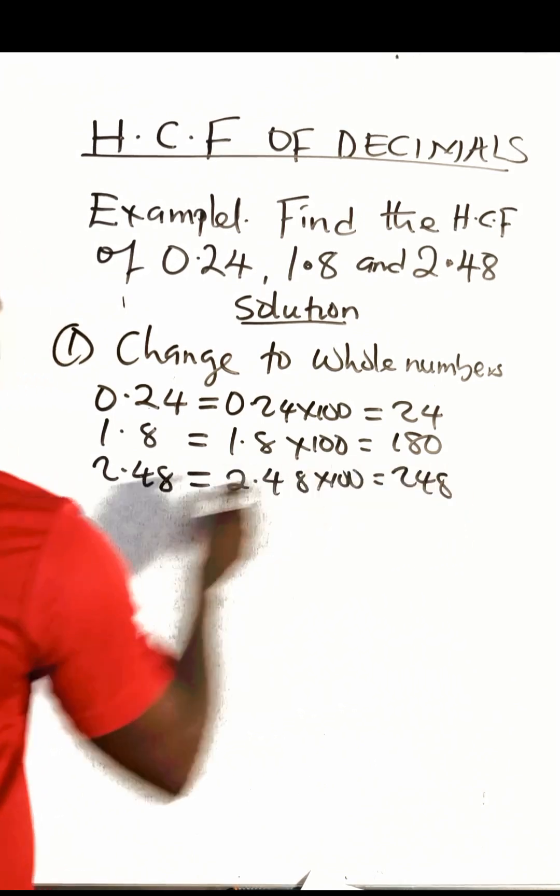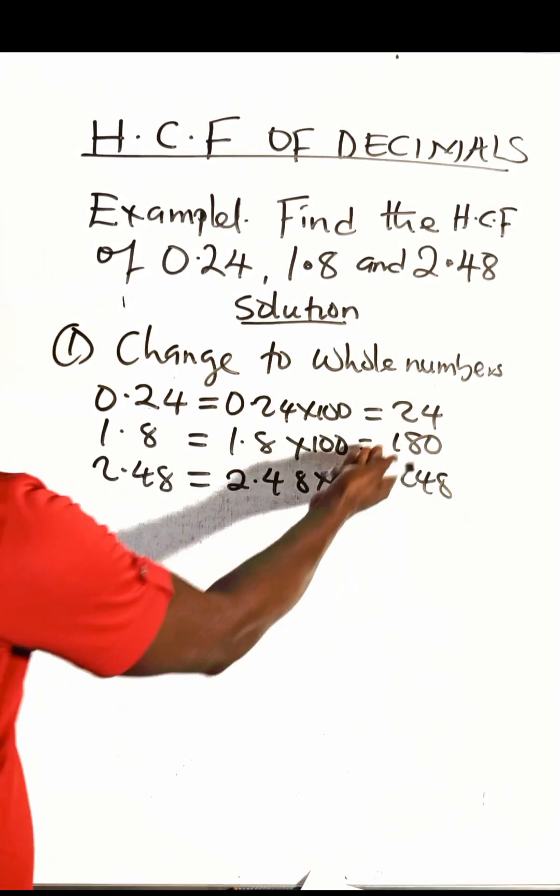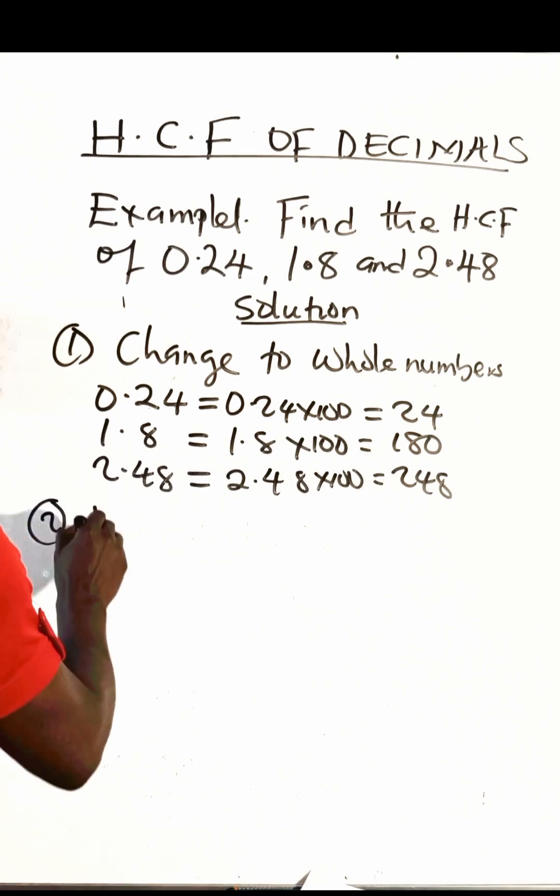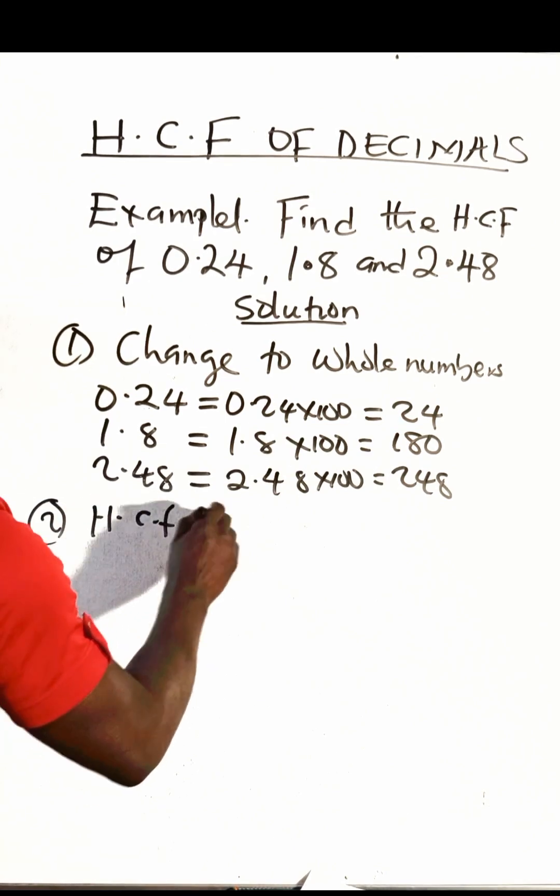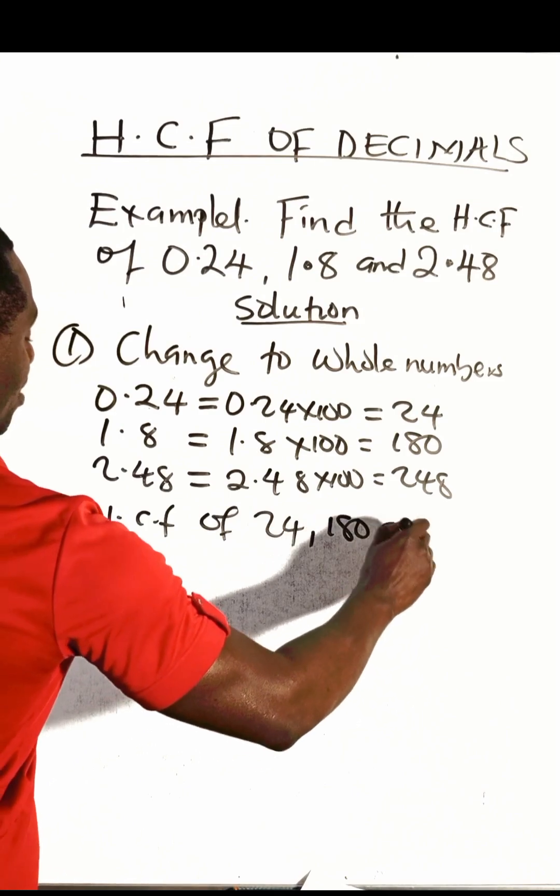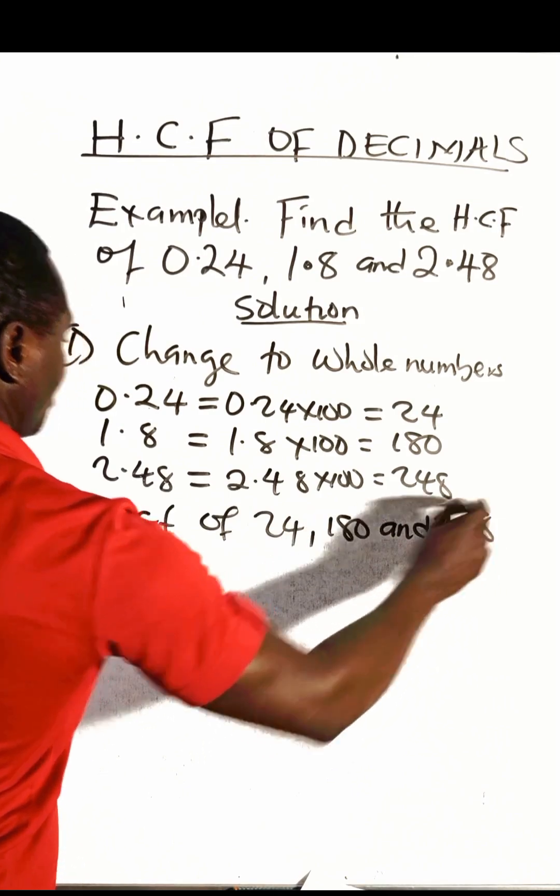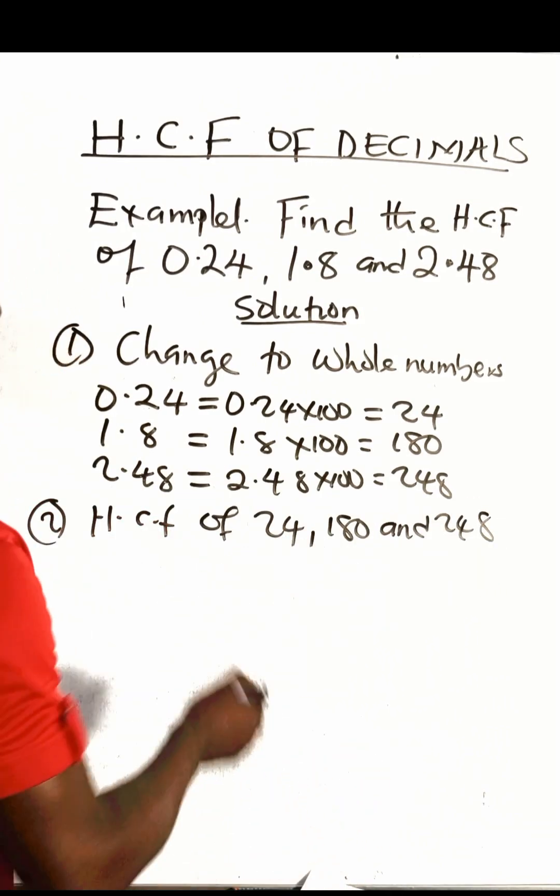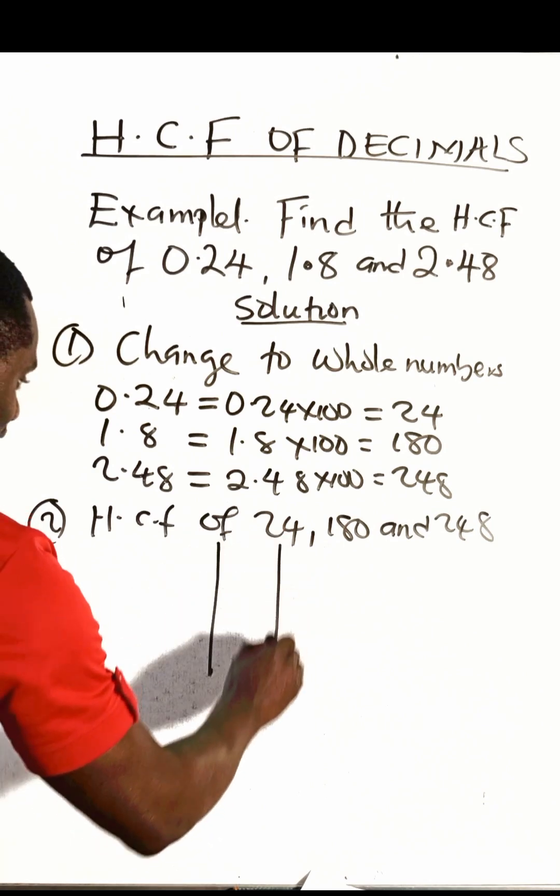Then the second step is to find the HCF of the whole numbers we have now. We can use any method, so let's use the tabular calculation method to get that.